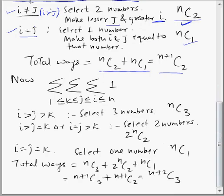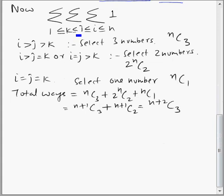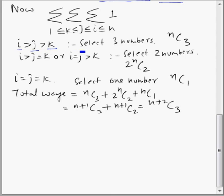Now let's take the case of triple sigma. Here k ≤ j ≤ i, and all three are bounded between 1 and n. For the first case, where i > j > k (all three strictly unequal), we select three numbers from the set of n natural numbers: the greatest is assigned to i, the middle one to j, and the smallest to k. This can be done in nC3 ways, so we count one nC3 times.